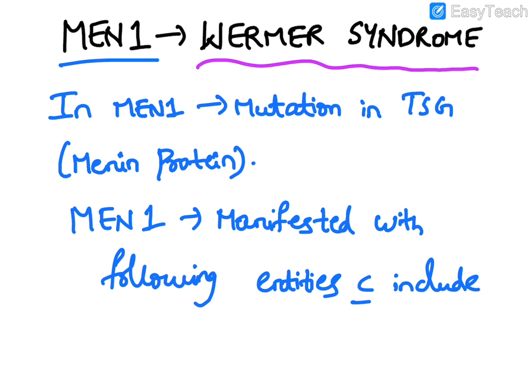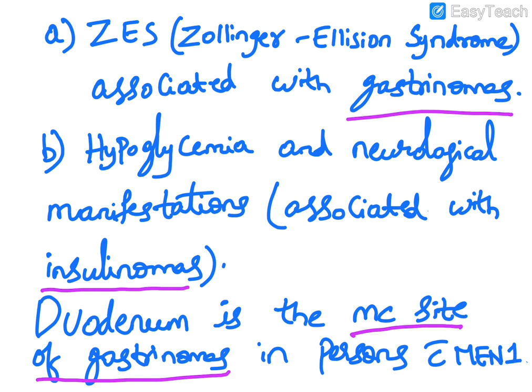MEN1 is also known as Wermer syndrome. It occurs due to mutation in a tumor suppressor gene encoding the menin protein. MEN1 is manifested with the following entities, which include Zollinger-Ellison syndrome associated with gastrinomas.